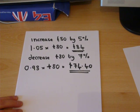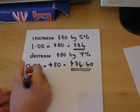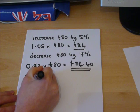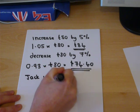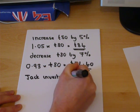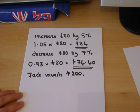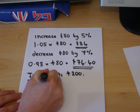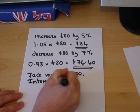Now, for the final example, suppose that Jack invests 200 pounds, and the interest is 200 pounds.